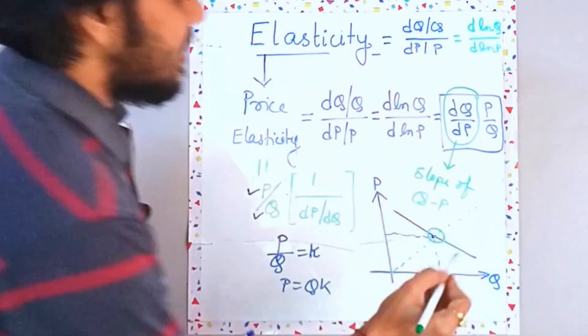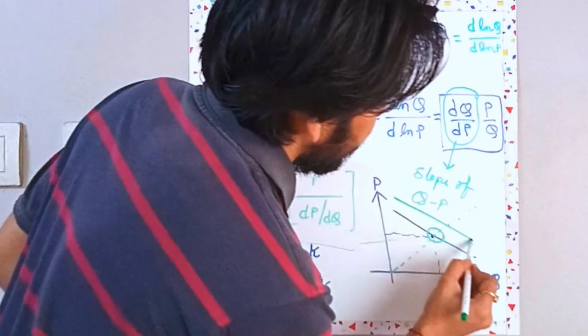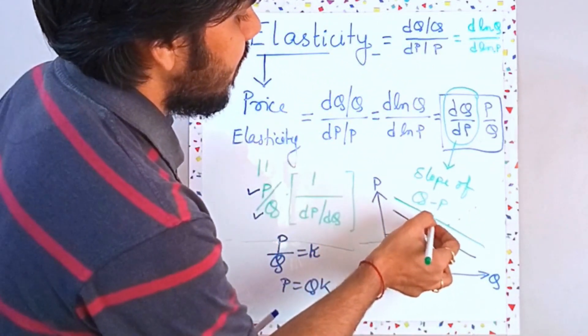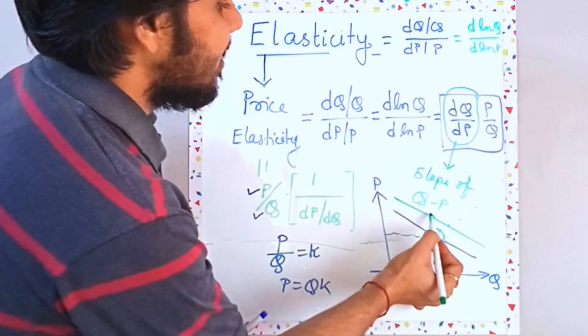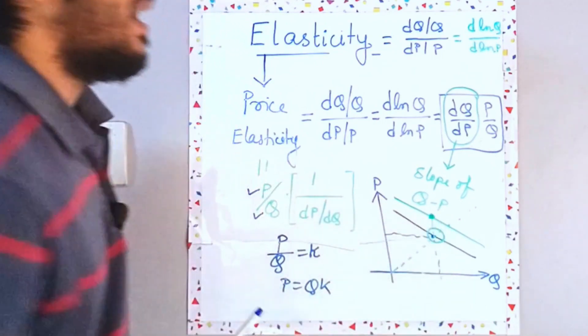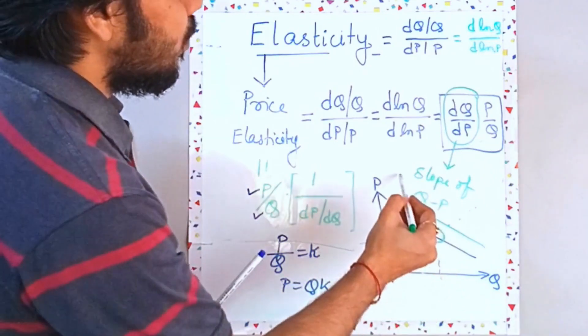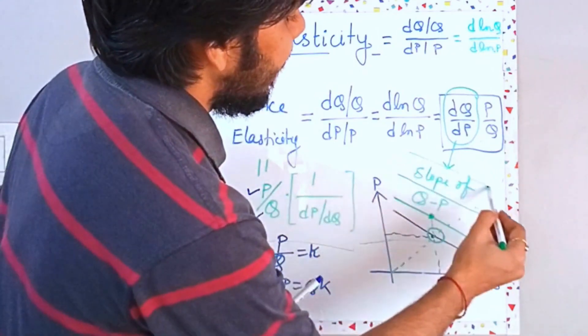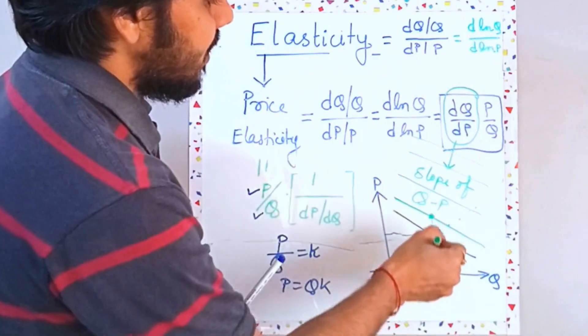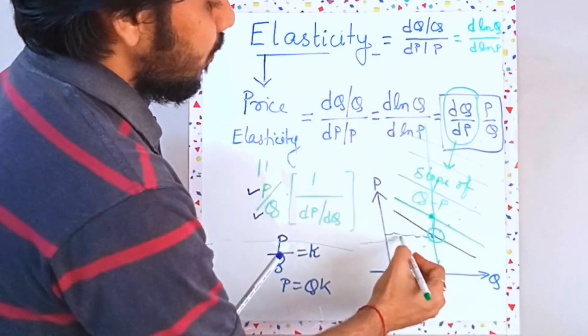You have the same slope, you have the same Q, but you have a higher P. So at this point, the elasticity is going to be higher. And as you keep on rising above, the elasticity will keep on increasing on this line.